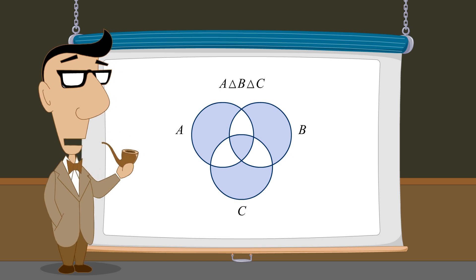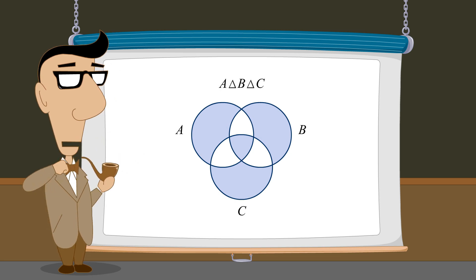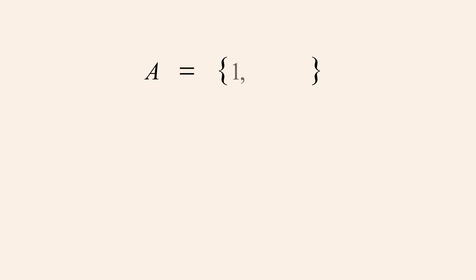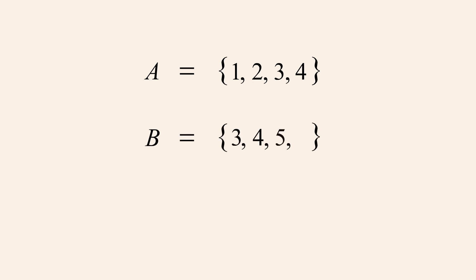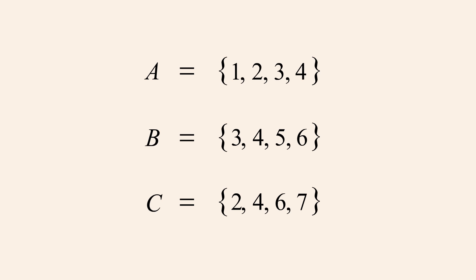Now, instead of Venn diagrams, let's do this one more time with three sets of numbers. Let's say that set A contains the numbers 1, 2, 3, and 4. Set B contains the numbers 3, 4, 5, and 6. And set C contains 2, 4, 6, and 7. We start by forming the symmetric difference of the first two sets A and B.